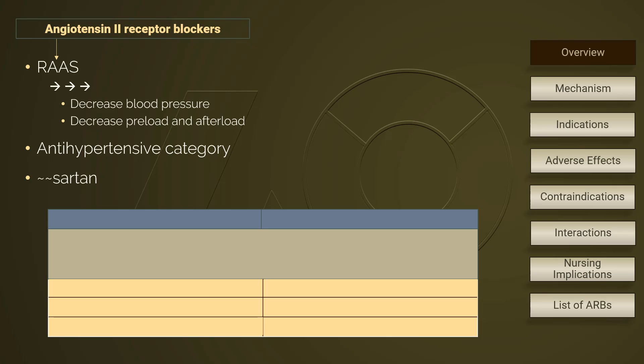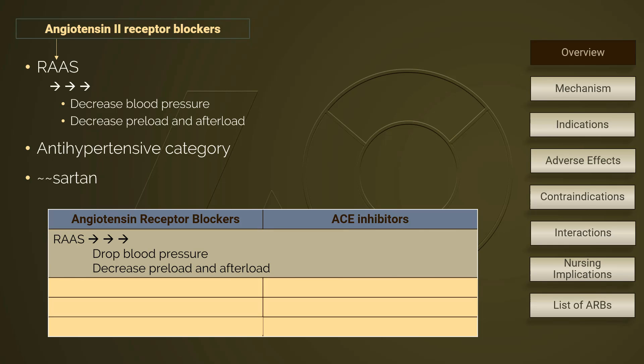Let's have a quick comparison between ARBs and ACE inhibitors. Both groups of medications work directly on the renin-angiotensin-aldosterone system, RAAS, and both drop blood pressure and decrease preload and afterload. ACE inhibitors interfere with the conversion of angiotensin-1 to angiotensin-2 by inhibiting the angiotensin-converting enzyme, ACE. However, hindering ACE does not mean a total blockage of the effects of angiotensin-2, because there are other pathways allowing angiotensin-1 to convert to angiotensin-2.